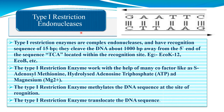Type 1 restriction enzymes are complex endonucleases with a recognition sequence of 15 base pairs. They cleave DNA about 1000 base pairs away from the 5-prime end of the sequence TCA located within the recognition site. Examples are EcoK12 and EcoB. Type 1 restriction enzymes work with the help of many cofactors like S-adenosyl methionine, ATP, and magnesium.